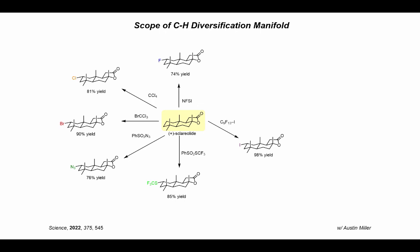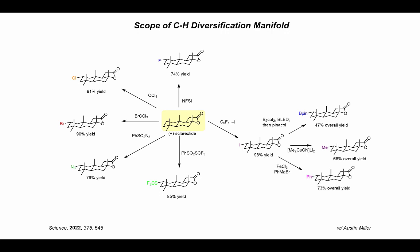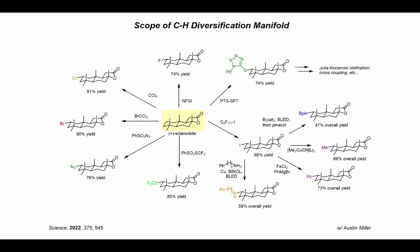Austin Miller in our group spearheaded efforts towards further diversification using this alkyl iodide as a linchpin, since this C2 iodinated sclerolide product hadn't been demonstrated before. Austin showed you can transform this into a formal CH borylation product as well as the formal CH methylation product. Using iron conditions afforded a CH acylation product, and Greg Fu conditions transformed this into a CH aminated product — a formal alkane-amine dehydrogenative coupling. Austin also appended a phenyl tetrazole thiol, which could potentially be used as another linchpin in reactions like Staudinger ligations, cross couplings, etc.